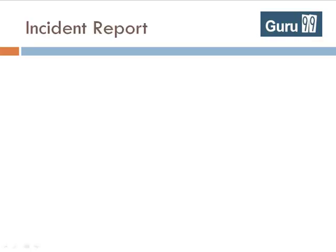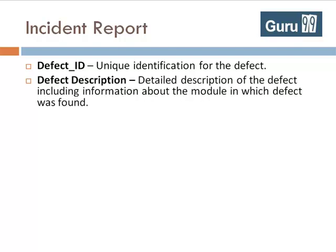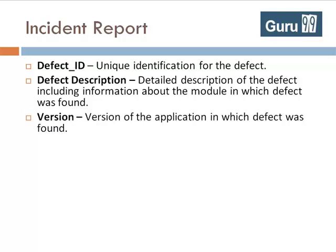Your bug report should contain the following information. Defect ID: a unique identification number for the defect. Defect description: a detailed description of the defect, including information about the module in which the defect was found. Version: the version of the application in which the defect was found.